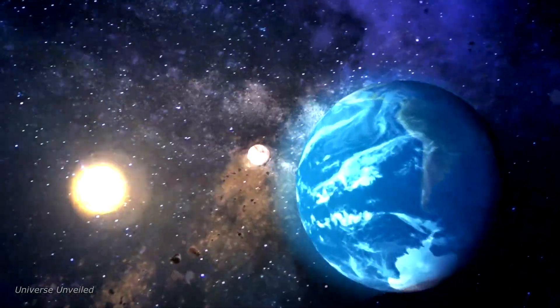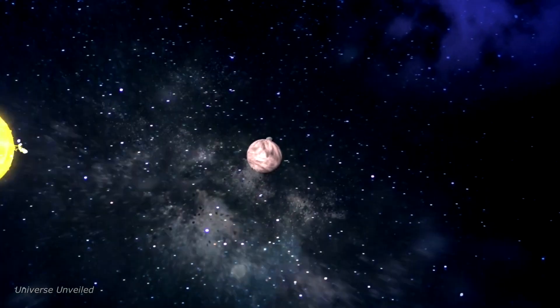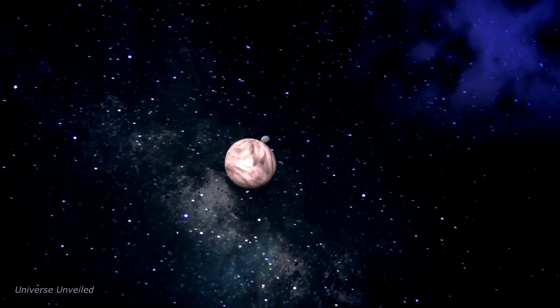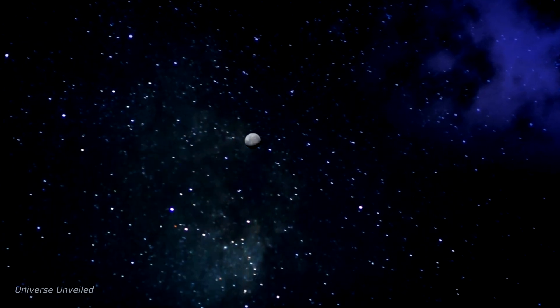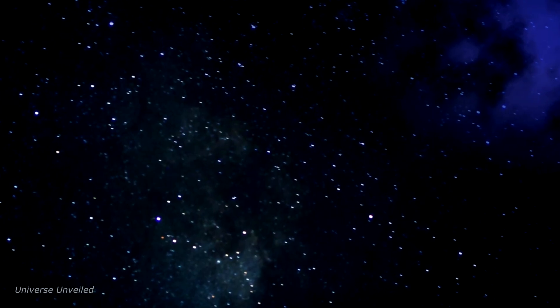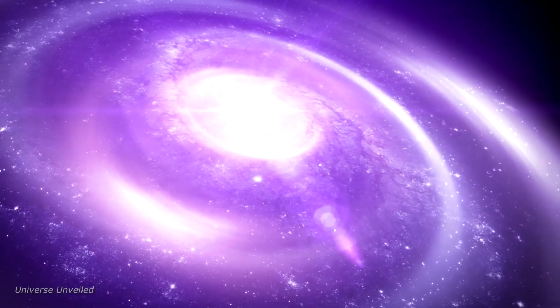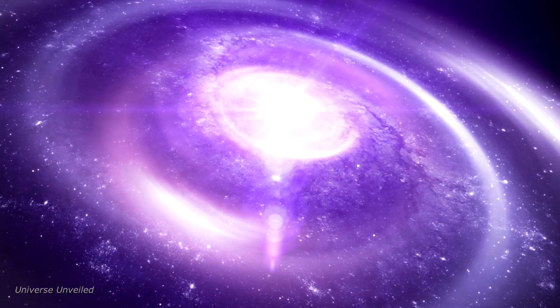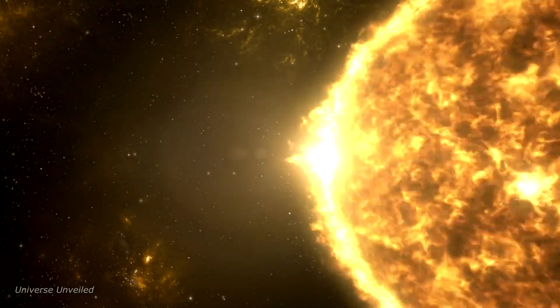These findings have profound implications for our search for habitable worlds. It's a stark reminder that not all planets orbiting in the habitable zone of their stars, the so-called Goldilocks zone, are necessarily hospitable for life. It underscores the fact that the search for habitable planets is far more complex than simply finding a world in the right location. It's about finding the right conditions, the right balance of elements, and the right kind of star.